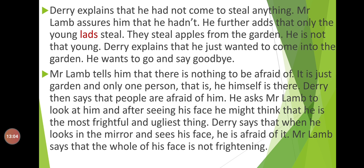Derry explains he had not come to steal anything. Mr. Lamb assures him he hadn't — only young lads steal apples from the garden, and Derry is not that young. Derry says he just wanted to come into the garden. Mr. Lamb tells him there is nothing to be afraid of; it is just a garden with only one person — himself. Derry then says that people are afraid of him. He asks Mr. Lamb to look at his face, saying after seeing it he might think him the most frightful and ugliest thing. Even when Derry looks in the mirror, he is afraid of his own face.